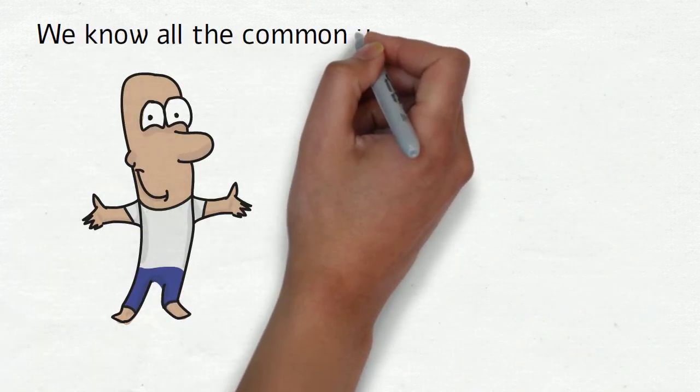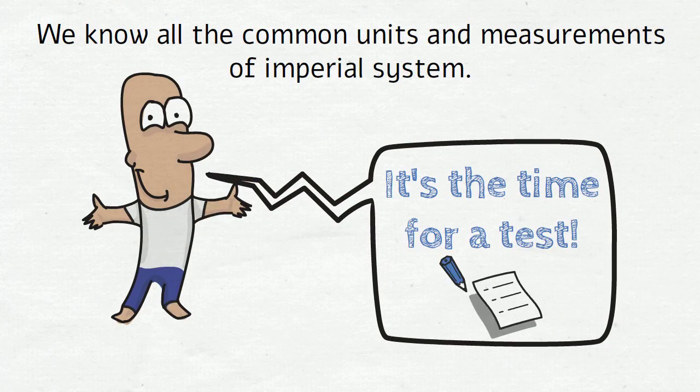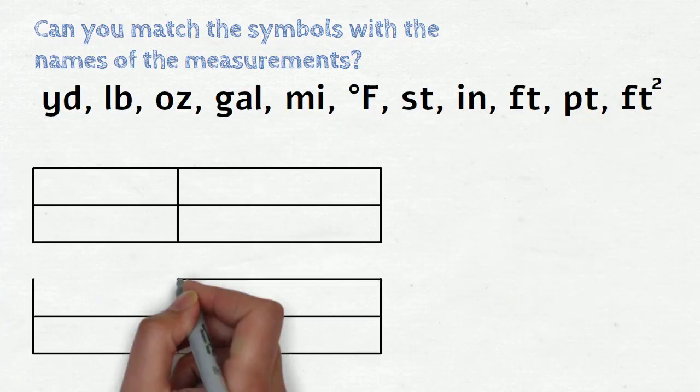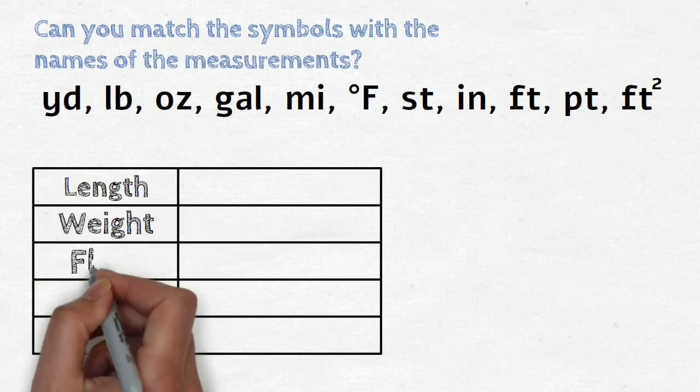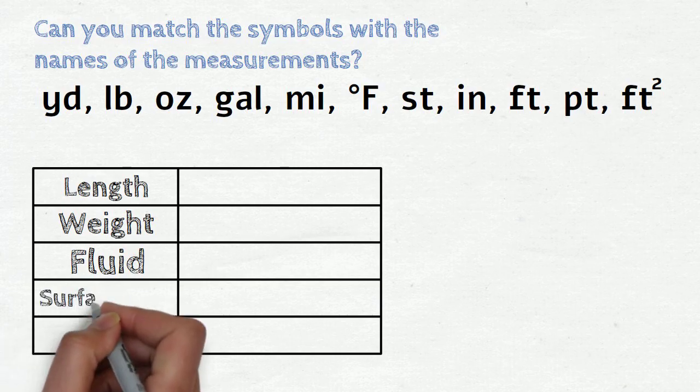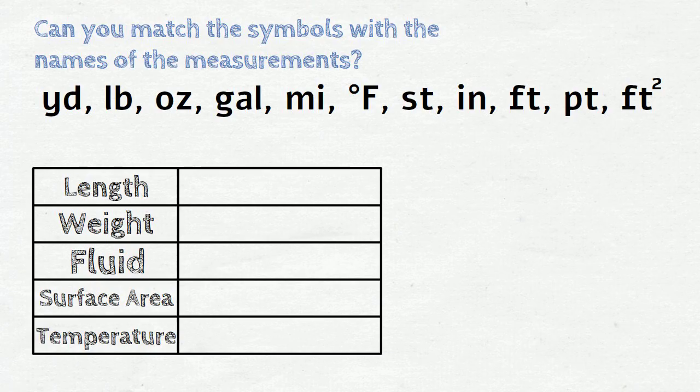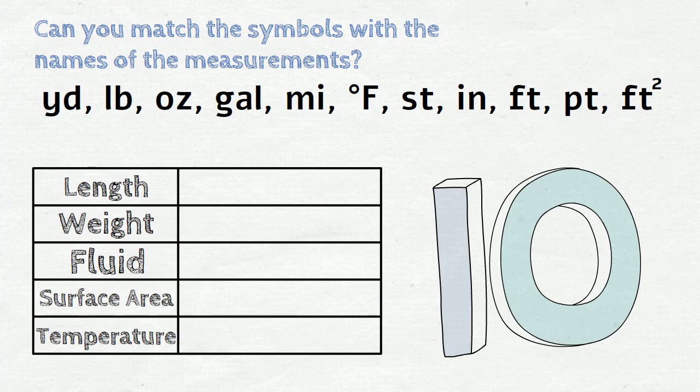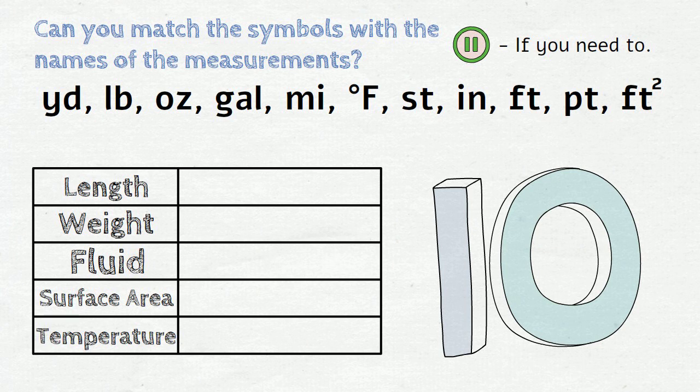So now that we know all the common units and measurements of imperial system, it's time for a test. Can you match the symbols with the names of the measurements? Length, weight, fluid, surface area, temperature. You will now have 10 seconds to complete this, but as always, don't worry, you can pause the video if you need to.